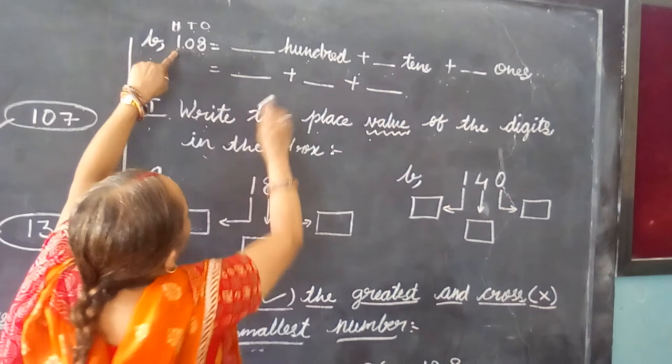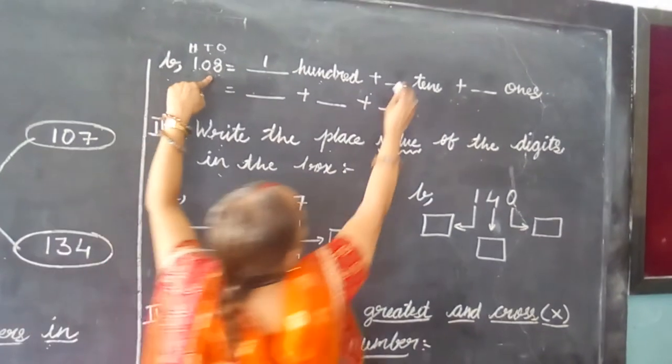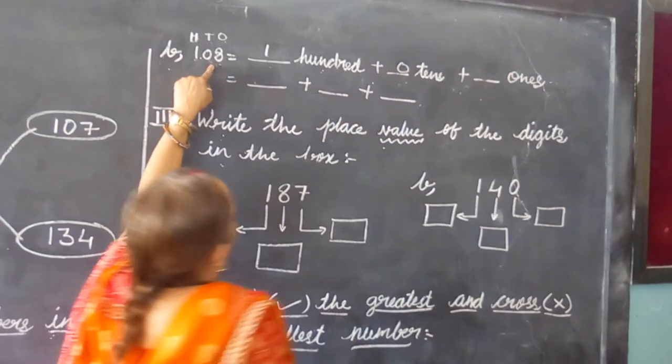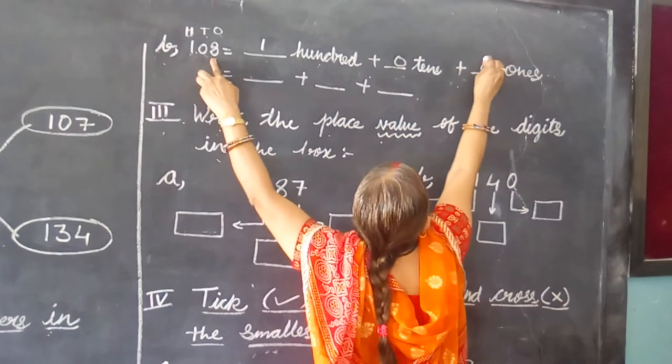Again, at 100 place is 1, so we are going to write here 1. At 10 place is 0, so we are going to write here 0. And at ones place it is 8, so we will fill here 8.